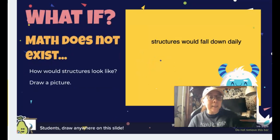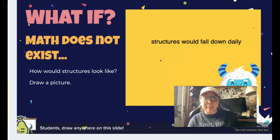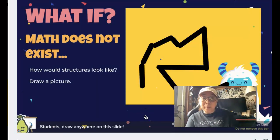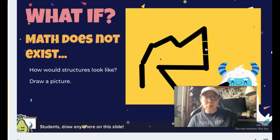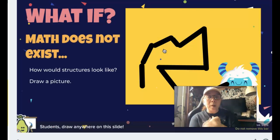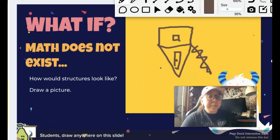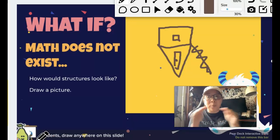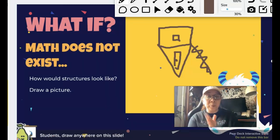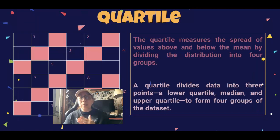This one didn't draw anything but says structures would fall down daily — I totally agree. This one looks a bit chaotic but it might show a staircase, a door, a floor plan — not really structured. We wouldn't be able to make perfect dimensions for our houses or buildings. I was also thinking of an upside-down house, rooted on the tip instead of the base. There are a lot of problems we might encounter if math did not exist in real life.